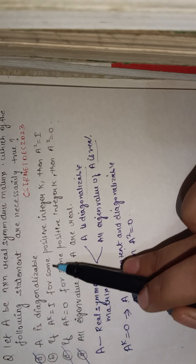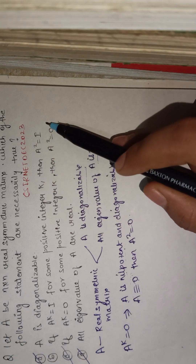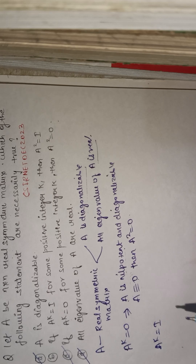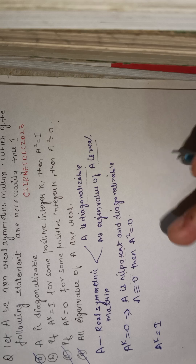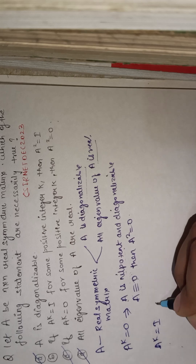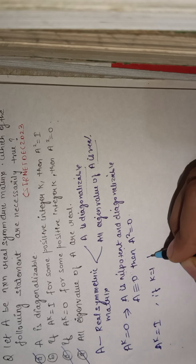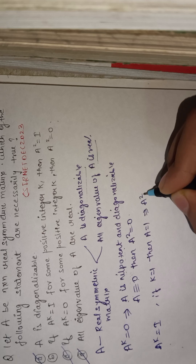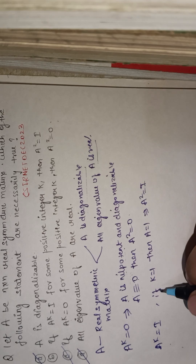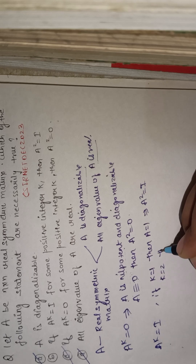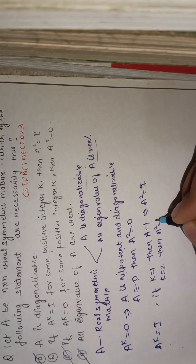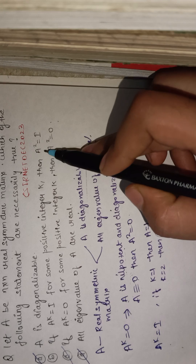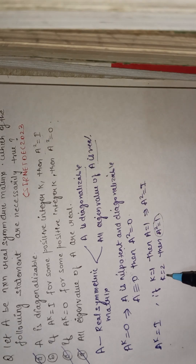Now we deal with option B: if A^k equals the identity for some positive integer k, then A² equals the identity. Here k can be anything. If k equals 1, then A equals identity, which implies A² also equals identity. If k equals 2, then A² equals identity, which also satisfies the condition.